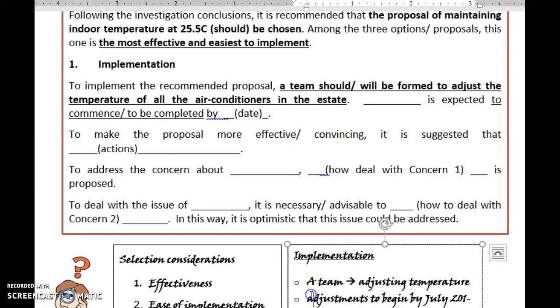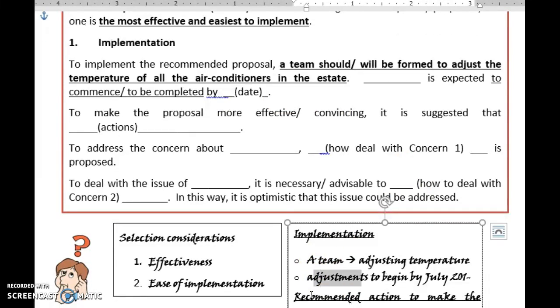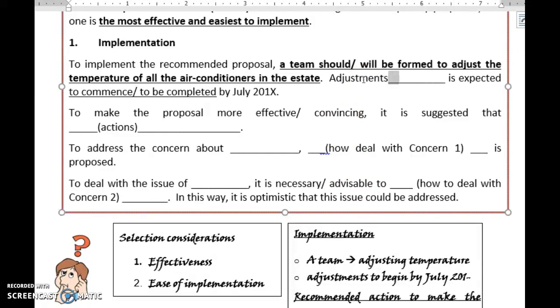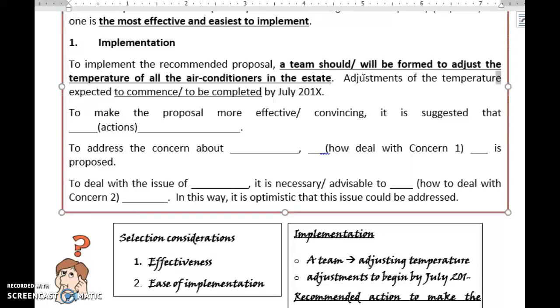Next point would be about a timeframe. So the timeframe is by July. But what should be done by July? This is the adjustments here. Adjustments - he means the temperature adjustment. Adjustments of the temperature is expected to begin.